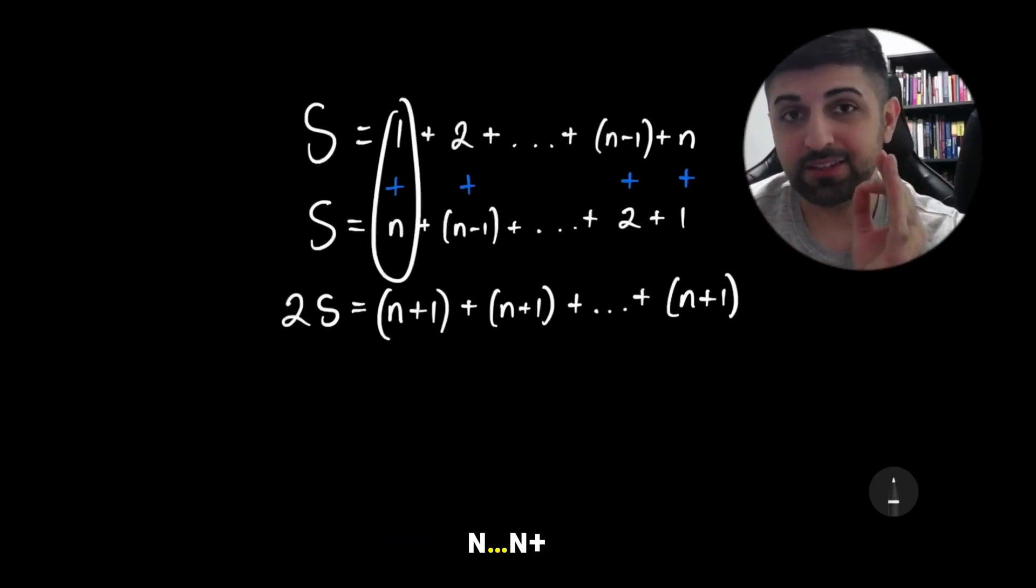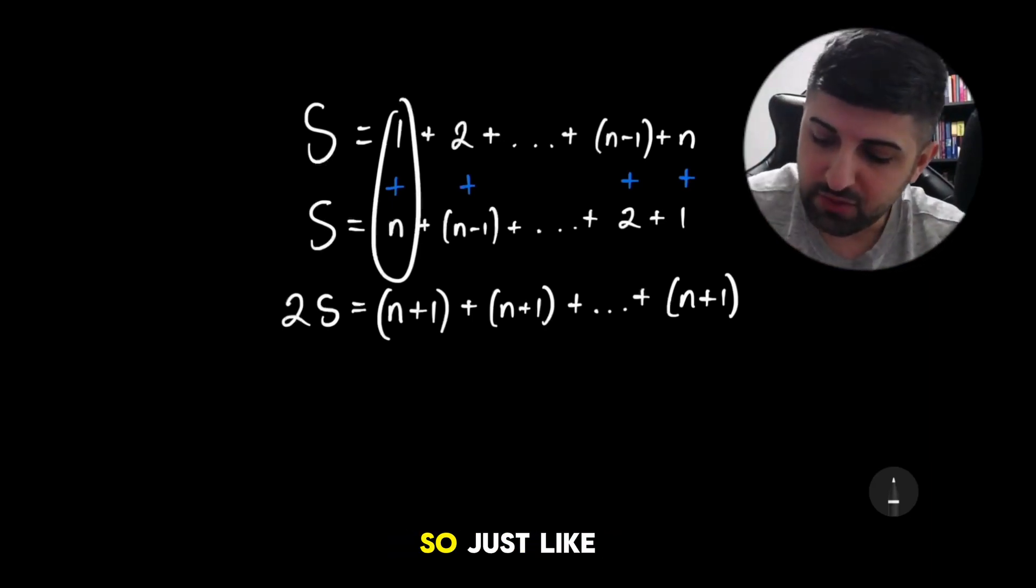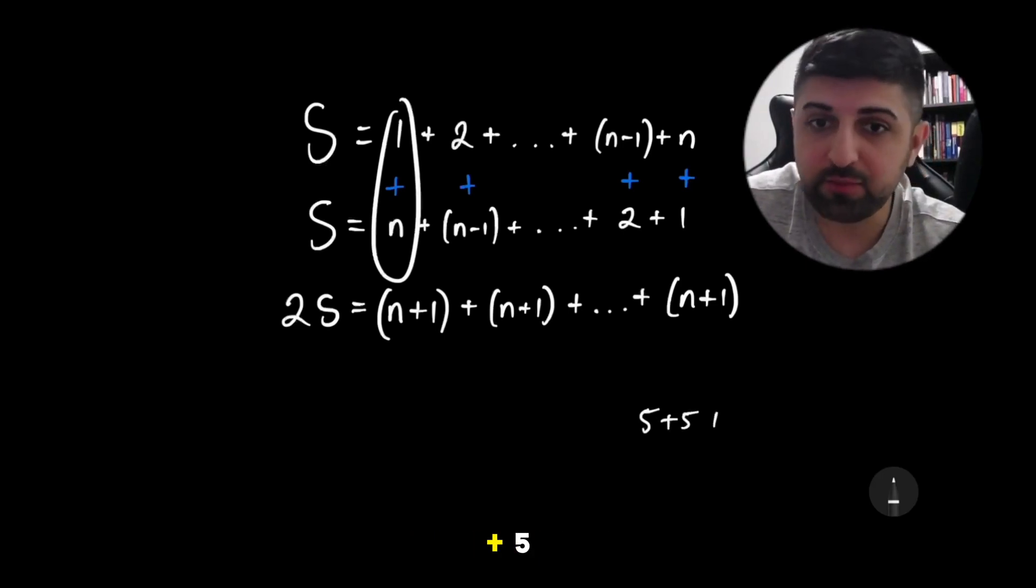I've created n n plus 1s, right? So just like you would do 5 plus 5 plus 5, and that's 3 times 5, right?